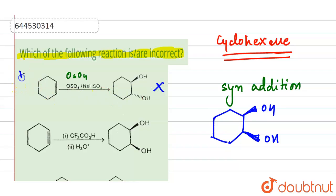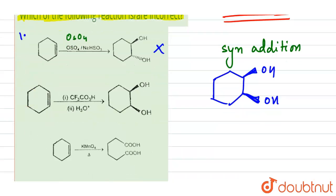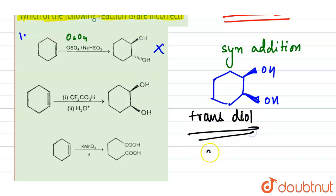In the next reaction, cyclohexene reacts with CF3CO3H followed by H3O+. Here we have anti addition, so we expect the formation of a trans diol. But the reaction shown gives a cis diol, so this is also incorrect and will also be part of our answer.